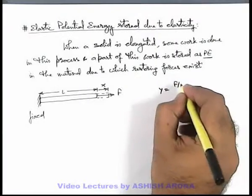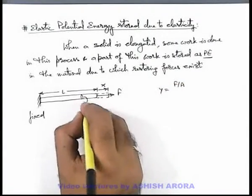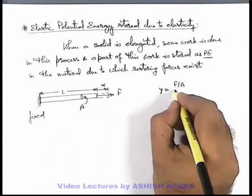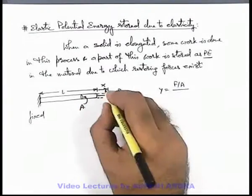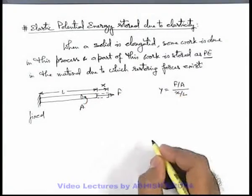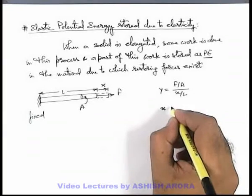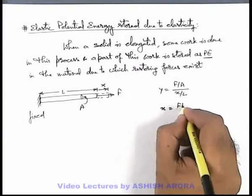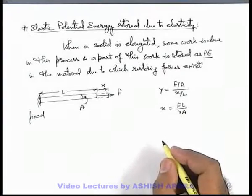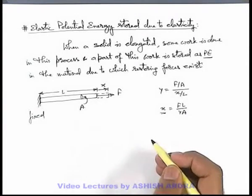By the definition of Young's modulus for the rod, we can write: Young's modulus Y equals force F upon the cross-sectional area A of the rod, divided by the strain, which will be x upon L. So in this situation, we can directly get the value of x, which can be written as FL upon YA. This is the value of elongation in the rod.